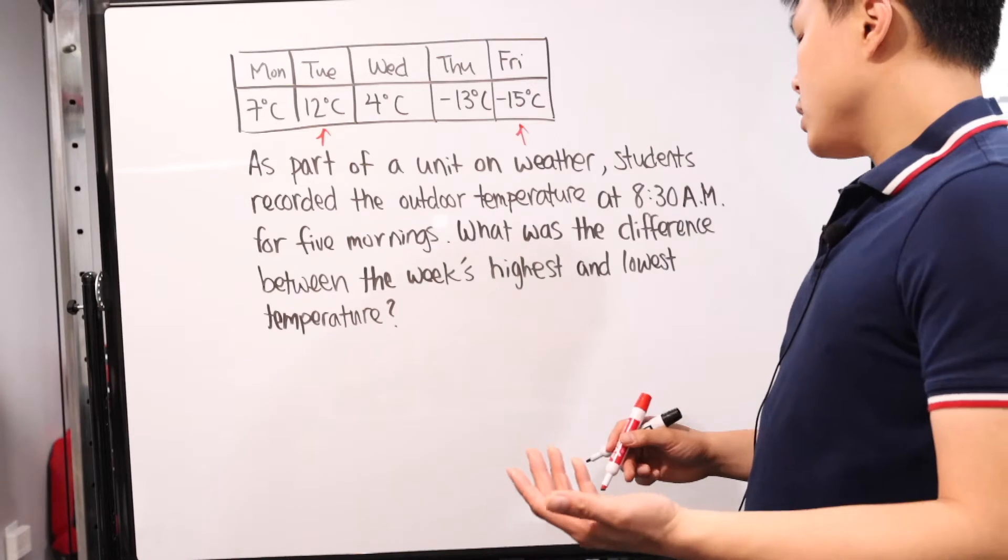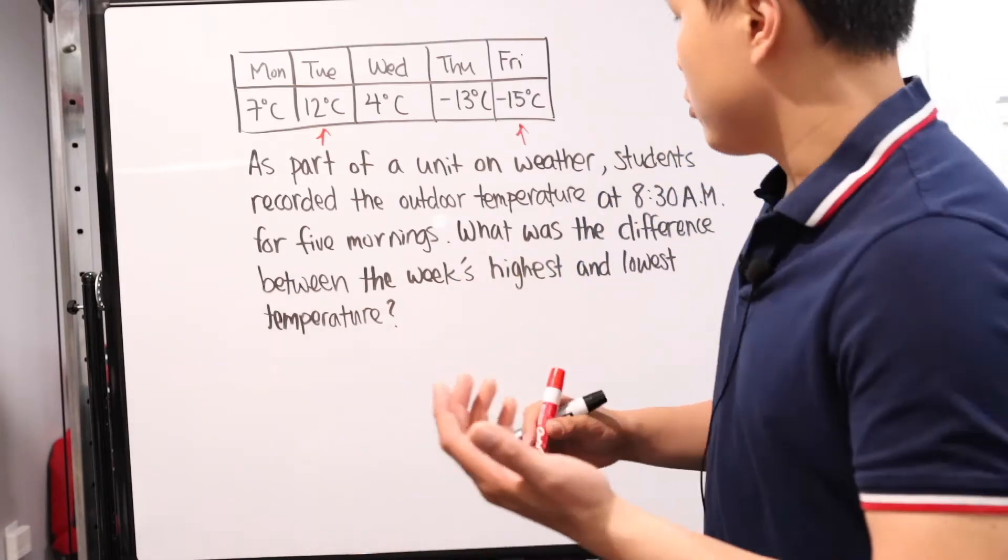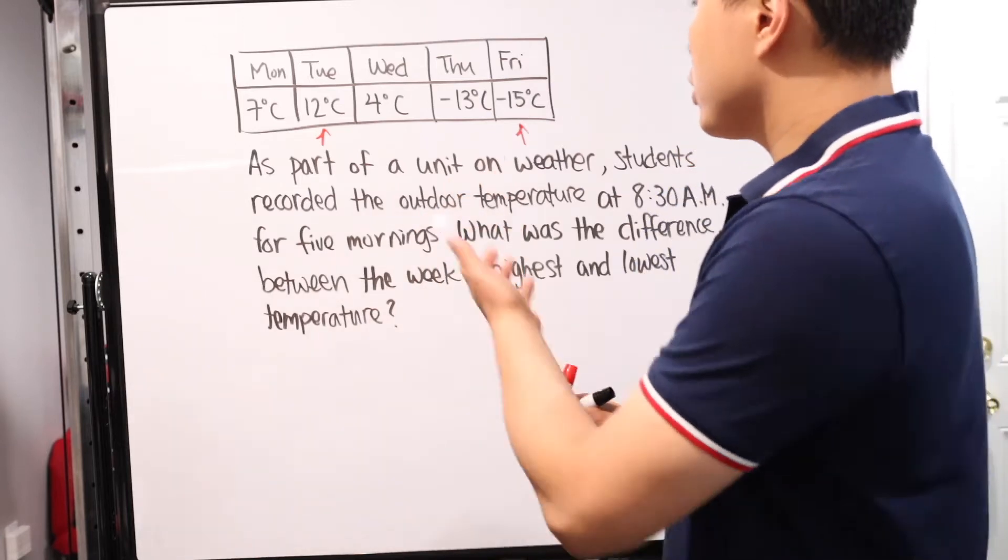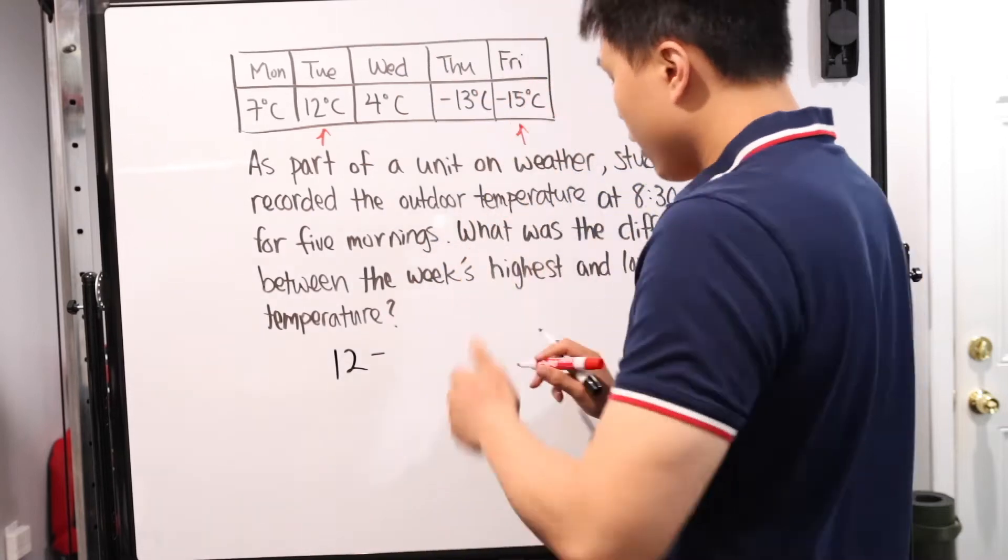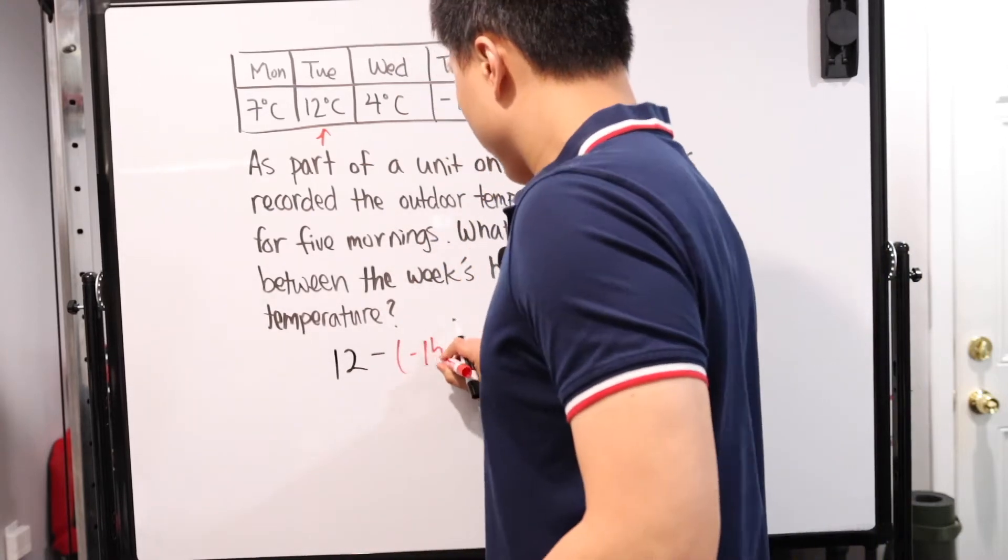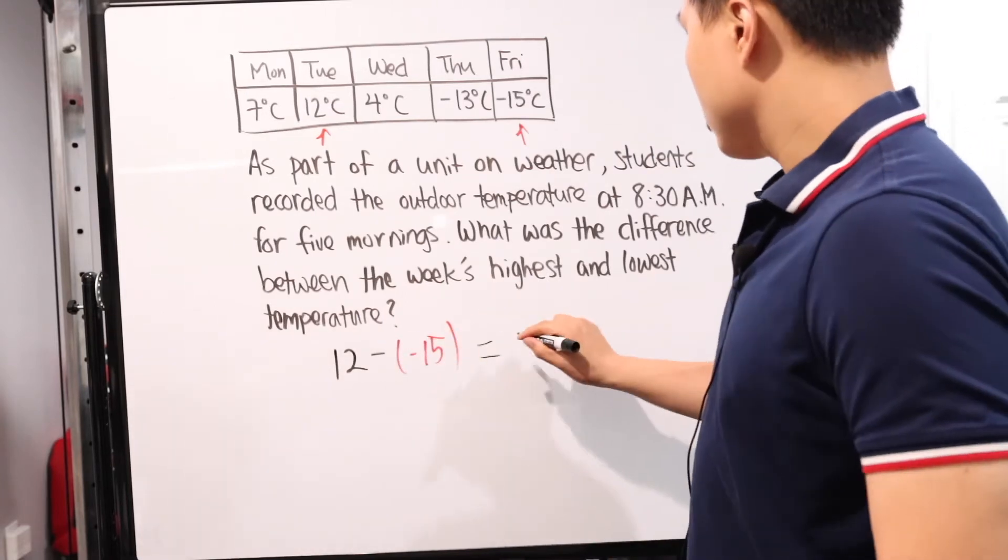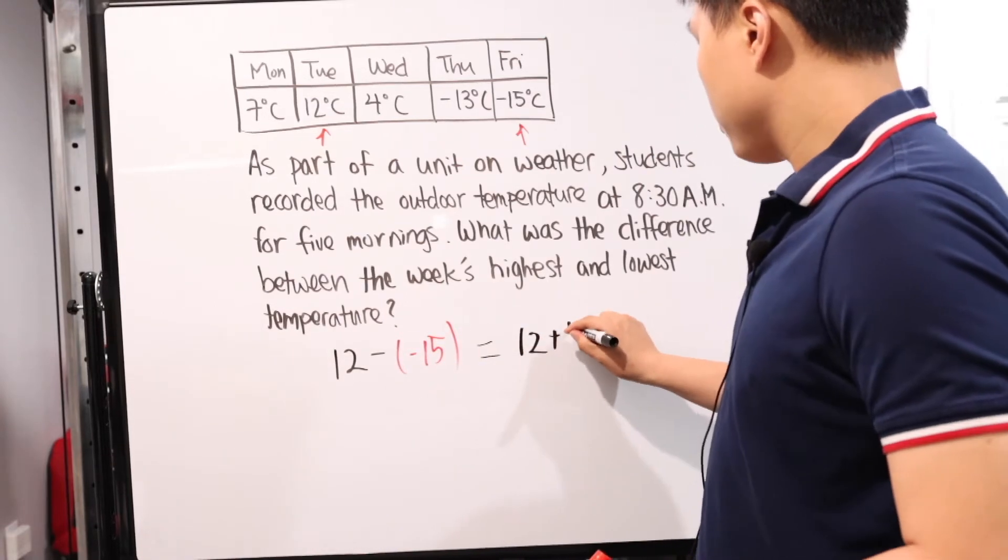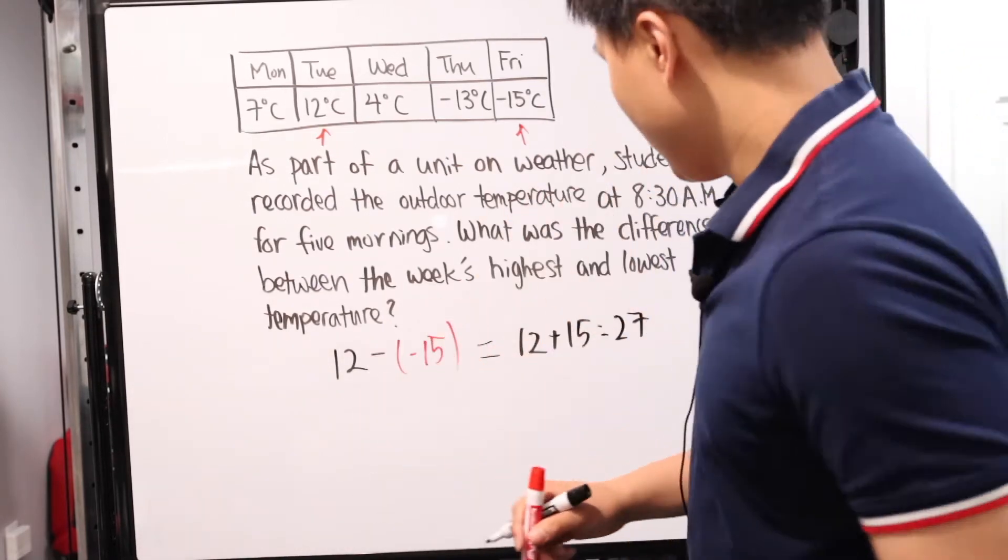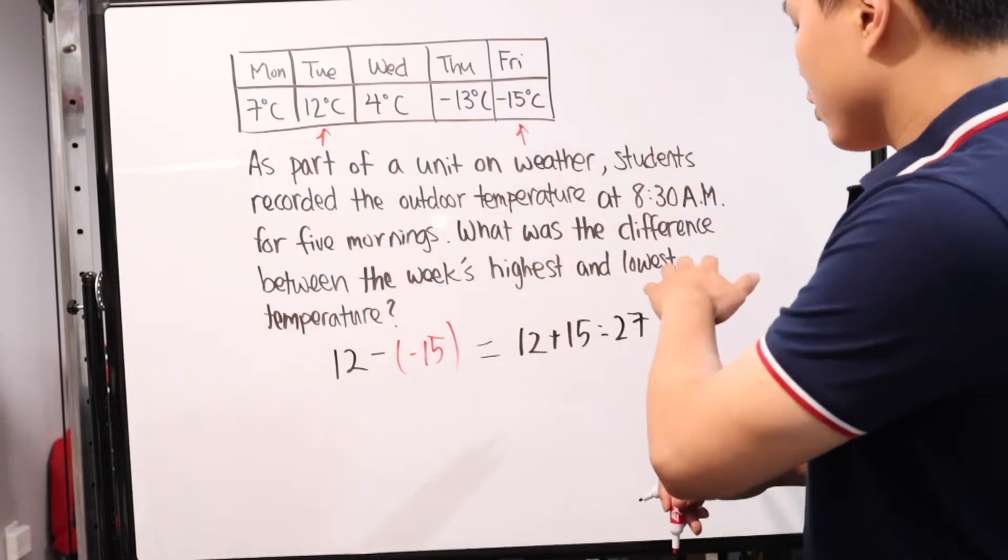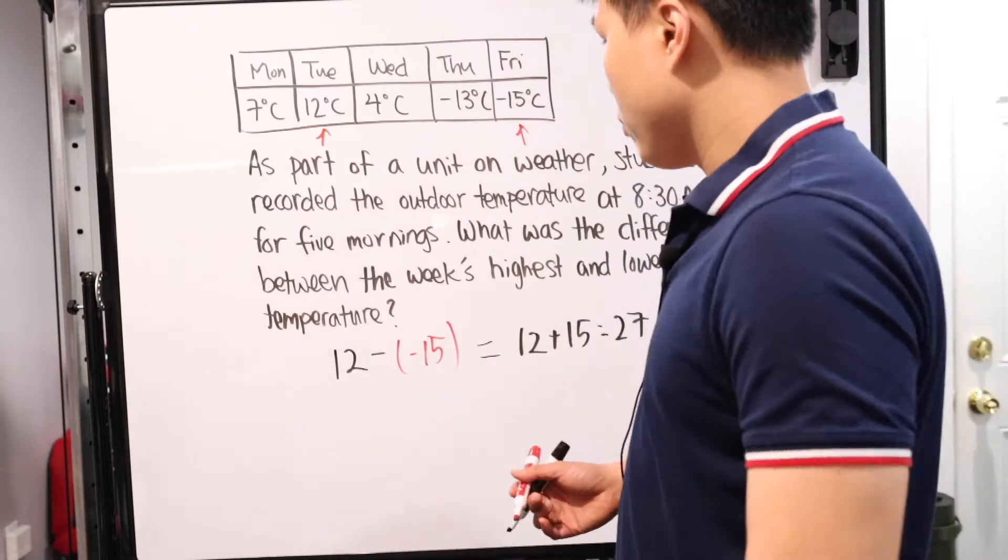It's asking for what's the difference. At this point, it's a simple combination of negative numbers. Difference is subtraction. So you would get 12 and you would subtract negative 15. In this case, negative negative is plus. So you basically have 12 plus 15, which is 27. Plain and simple, just like that.